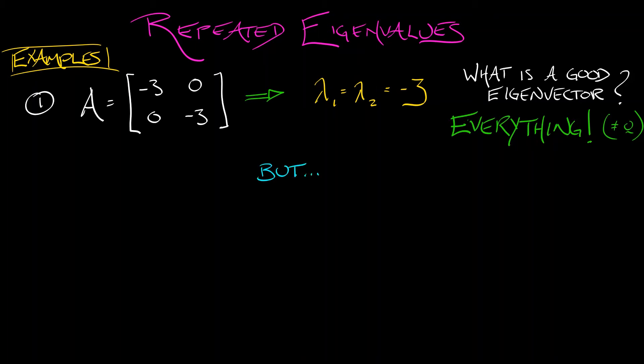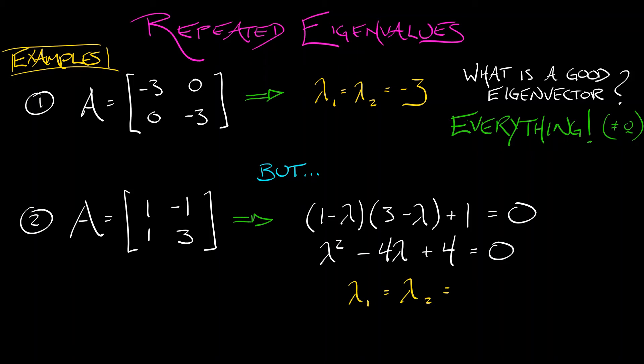But not every case is like that. Consider the matrix A given by 1, 1, -1, 3. That one, we're going to have to compute the characteristic polynomial. So I take the determinant of A minus λI. That's (1 - λ) times (3 - λ) minus (-1). I multiply that out, I get λ² - 4λ + 4. Set that equal to zero, and my roots are 2 and 2. Those are the eigenvalues; they're repeated.